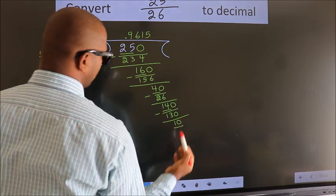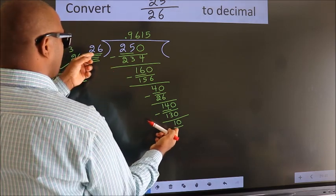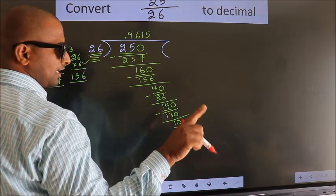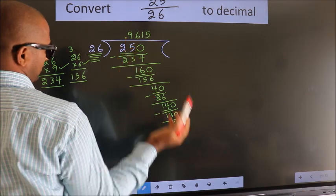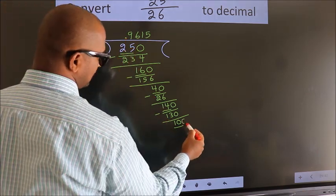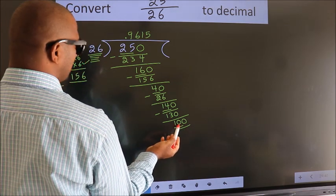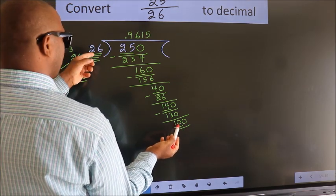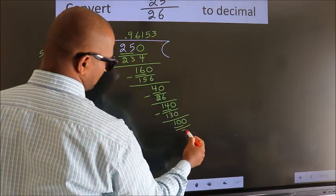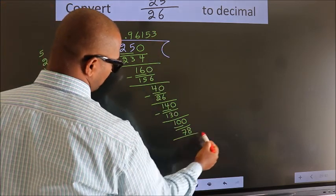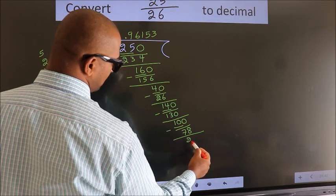Here we have 10, here 26. 10 is smaller than 26. We already have the decimal, so we can directly take 0. So 100. A number close to 100 in the 26 table is 26 threes, which is 78. Now we subtract. We get 22.